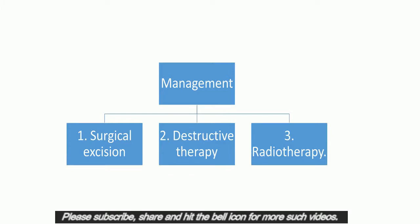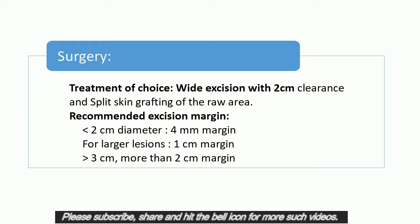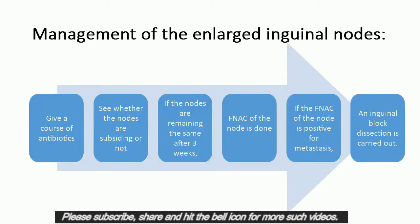The treatment options are: 1. Surgical excision, 2. Destructive therapy, 3. Radiotherapy. Surgery: treatment of choice is wide excision with 2 cm clearance and split skin grafting of the raw area. Recommended excision margins: for lesions less than 2 cm diameter, a 4 mm margin is adequate; for larger lesions, 1 cm margin is recommended; for lesions larger than 3 cm, more than 2 cm margin may be required. Management of enlarged inguinal nodes: give a course of antibiotics and see whether the nodes subside. If the nodes remain the same after 3 weeks, FNAC of the node is done. If FNAC is positive for metastasis, an inguinal block dissection is carried out.